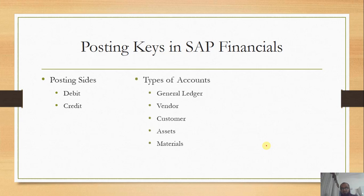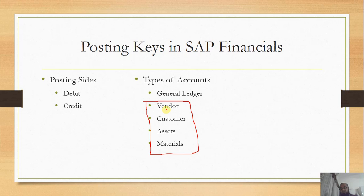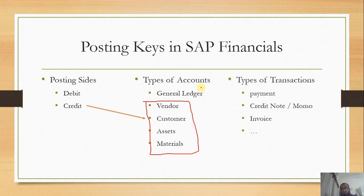In accounting we have two posting sides — debit and credit — and generally we have the general ledger accounts and these are the four detailed ledger accounts known as the subsidiary ledgers. It can be a vendor ledger, accounts payable control account, customer ledger, accounts receivable control account, assets, fixed assets, or materials and inventory items, for which there are just one, two, or three selected control accounts in the general ledger.